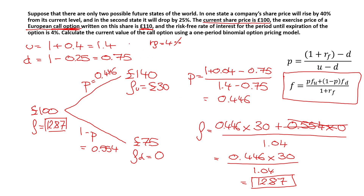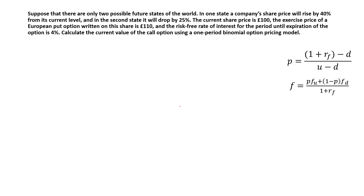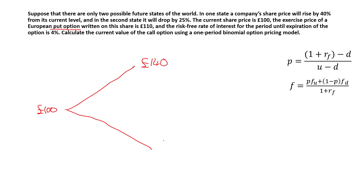Now let's move on to the same exercise but with a put option — purely for illustration purposes to understand how the binomial tree and option pricing works. A put option, compared to a call option, is one where you make money when the share price goes down. The share prices in the tree are exactly the same as before, but the option prices are going to change.